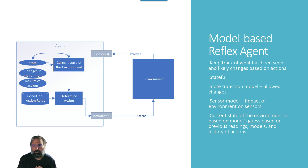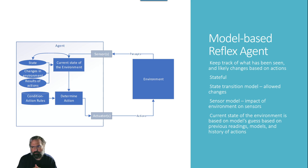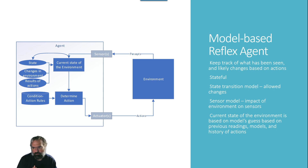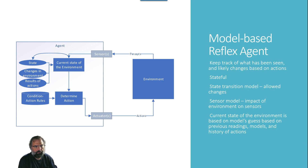A model-based reflex agent keeps track of what the agent has seen and likely changed based upon its actions. It is stateful in nature, with a state transition model that keeps track of allowed changes based upon what it has observed and hasn't observed. The sensor model — impact of the environment on those sensors — is kept track of. The current state of the environment is based upon the model's guess from previous readings, and then it determines action based upon those combinations.